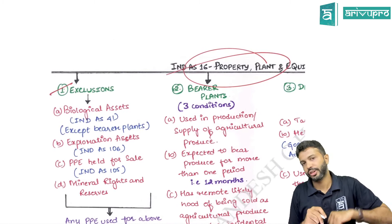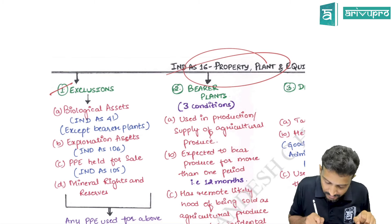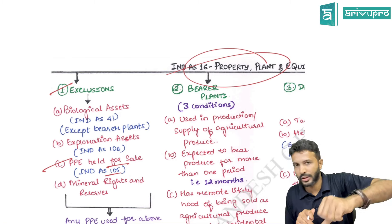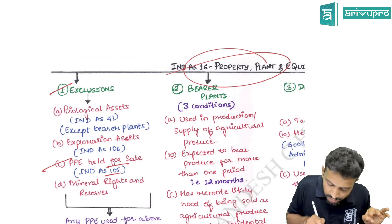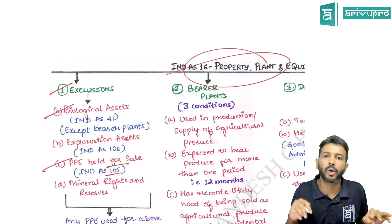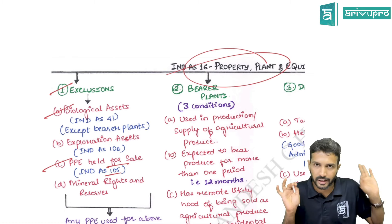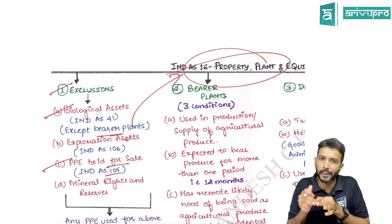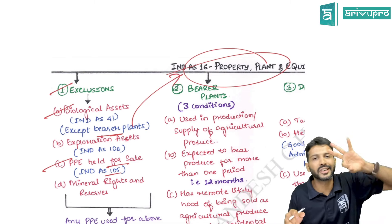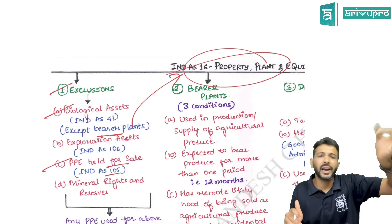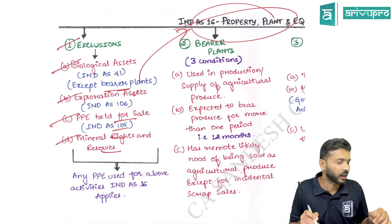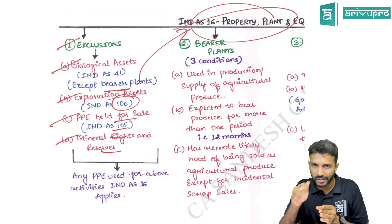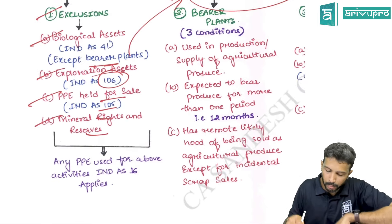First, we look at exclusions. PP held for sale is accounted as per IND AS 105. Biological assets are accounted as per IND AS 41, with one exception: bearer plants — for bearer plants IND AS 16 applies. For other biological assets IND AS 41 is triggered. Exploration assets like mineral ores, coal, etc. fall under IND AS 106.